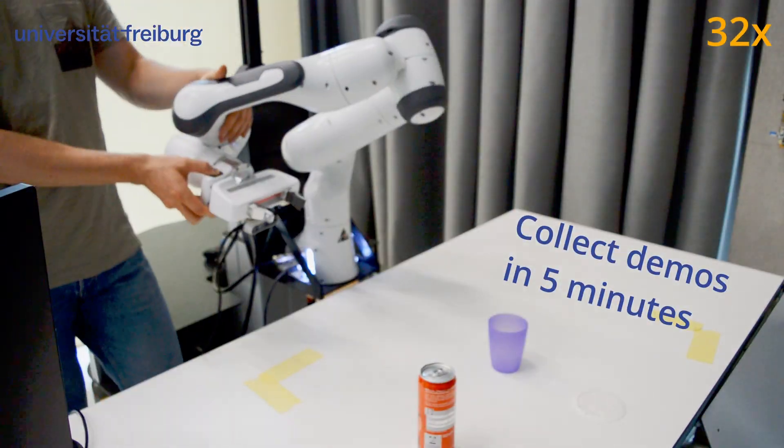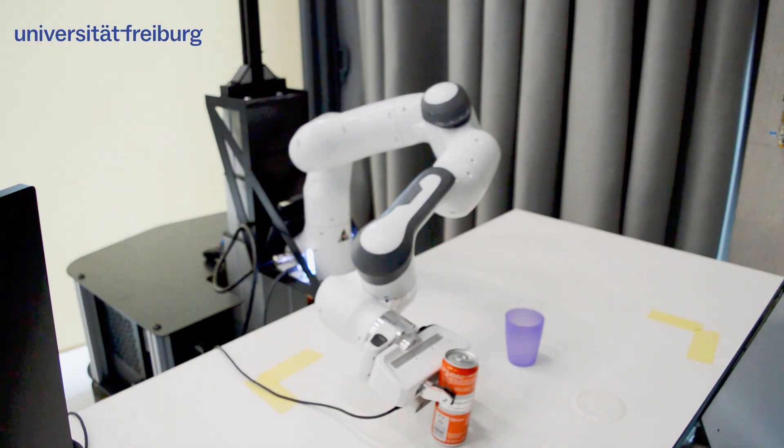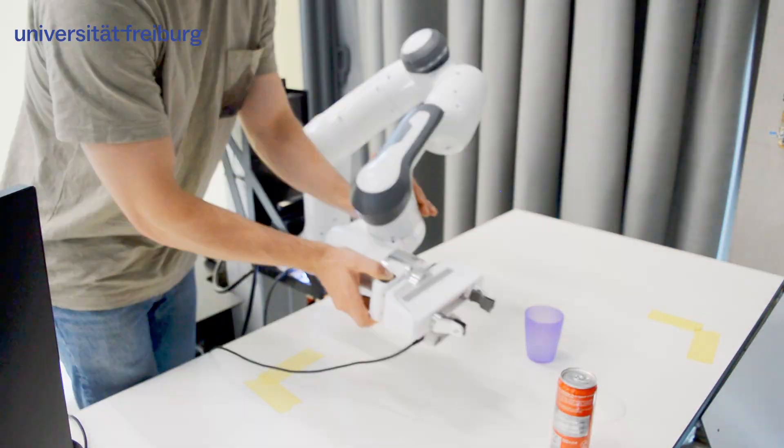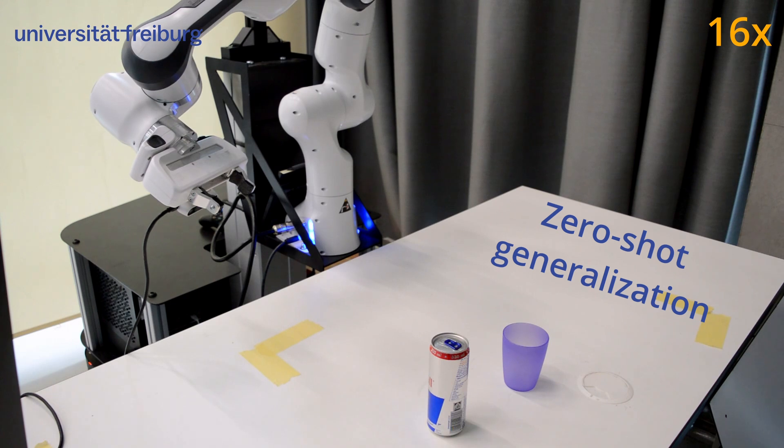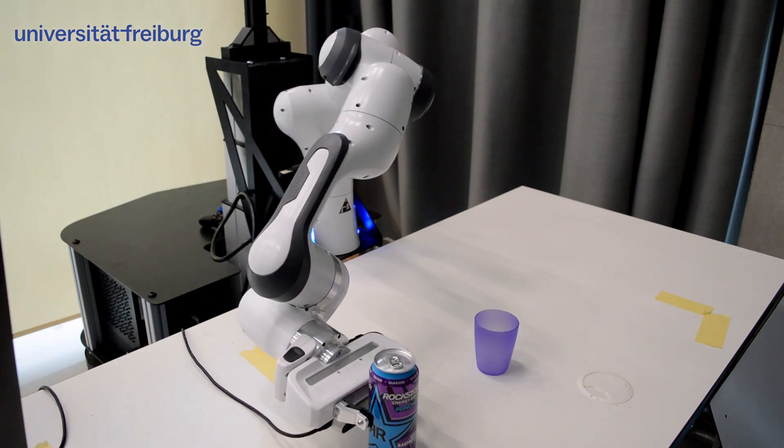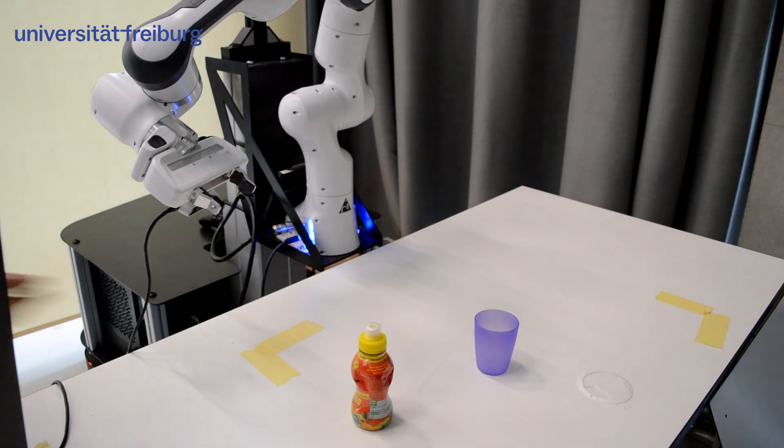Tapas GMM learns new tasks in less than 10 minutes. Even for long horizon manipulation it requires just 5 demonstrations and training needs a few minutes as well. Through our use of scene key points as task parameters, our policies generalize zero shot to unseen object instances, task environments and cluttered scenes.